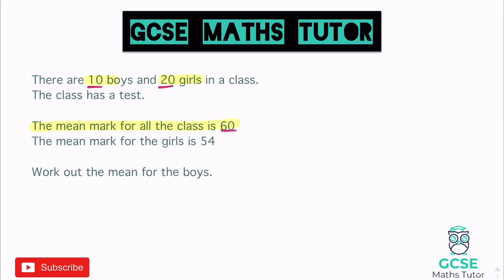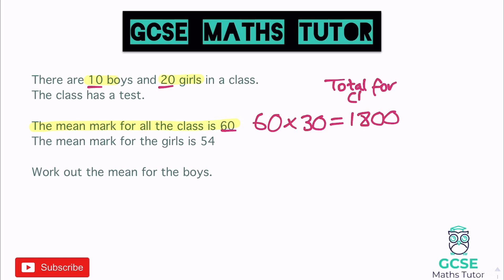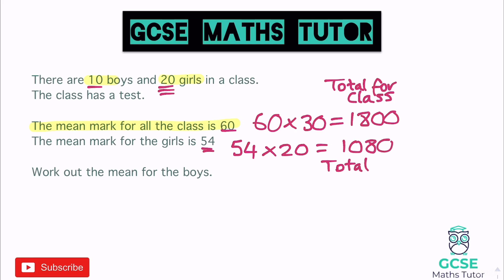The mean for the whole class is 60 and there are 30 students, so we do 60 times 30. Six times 3 is 18, add on the two noughts, that's 1800. That is the total for the class. The next bit of information is that the mean mark for the girls is 54. There are 20 girls, so we take their mean, 54, and times it by 20 to find their total.